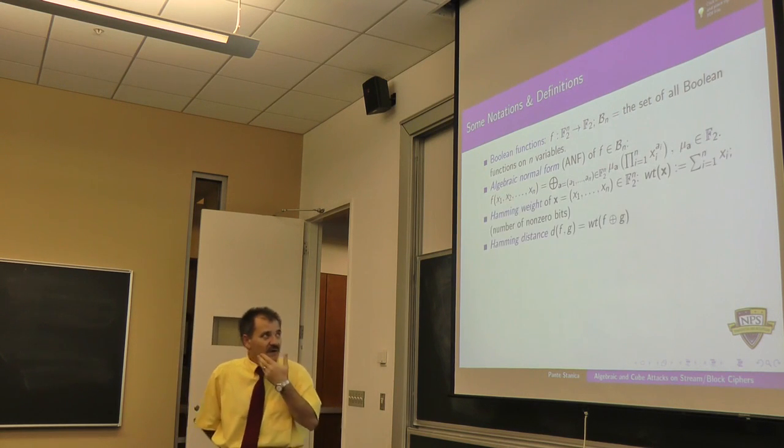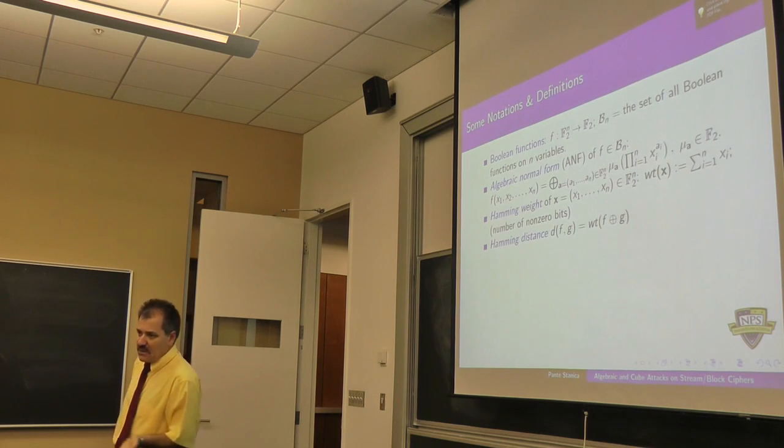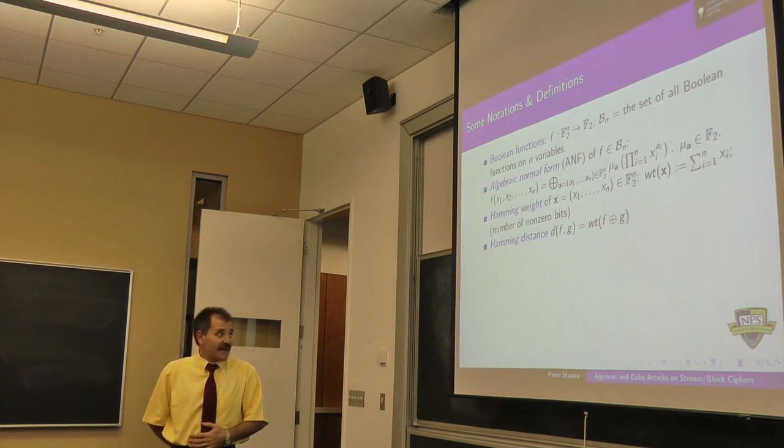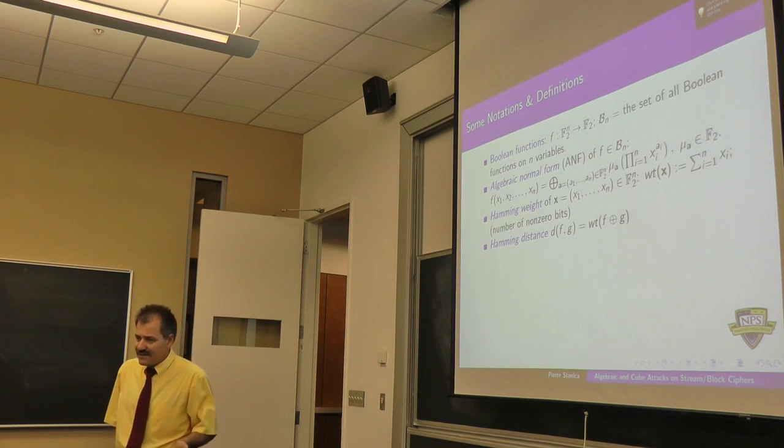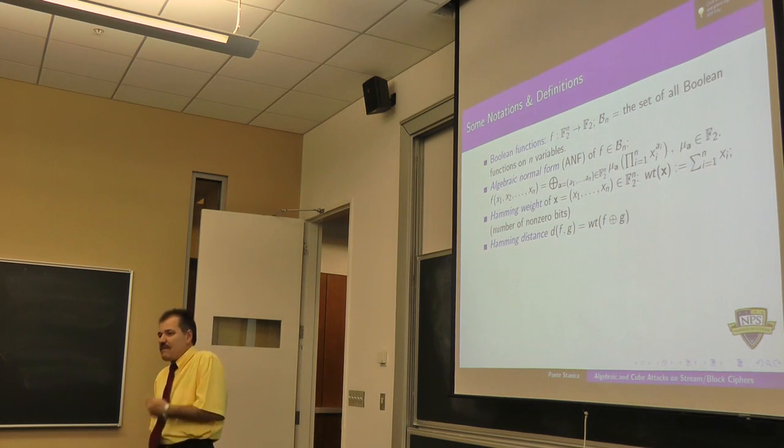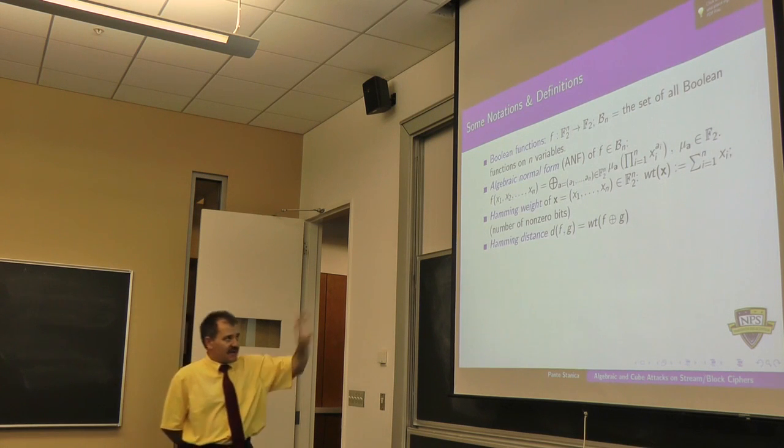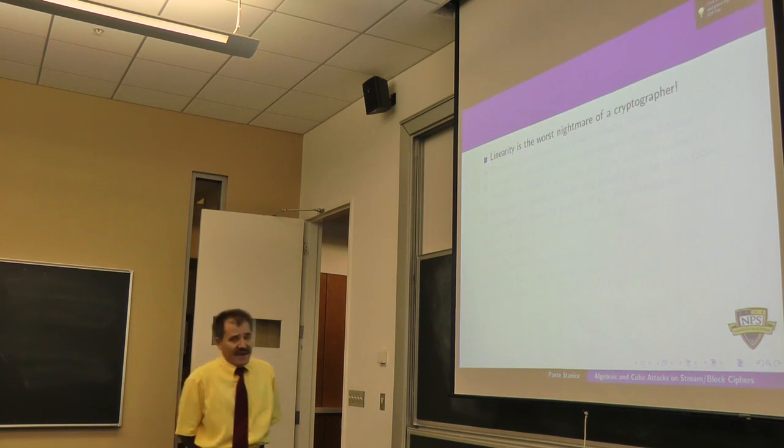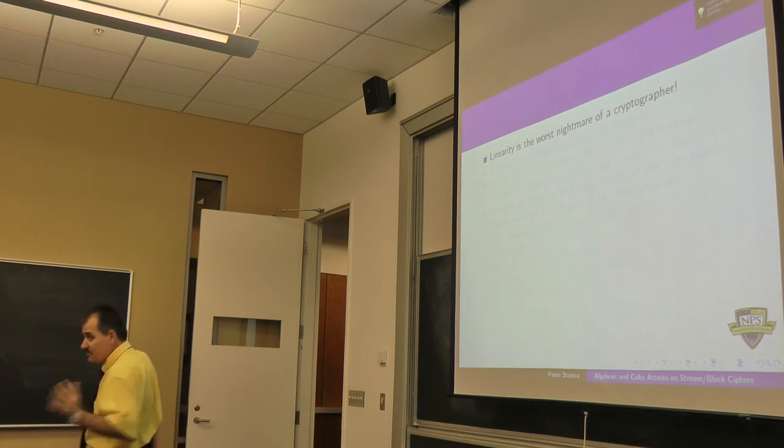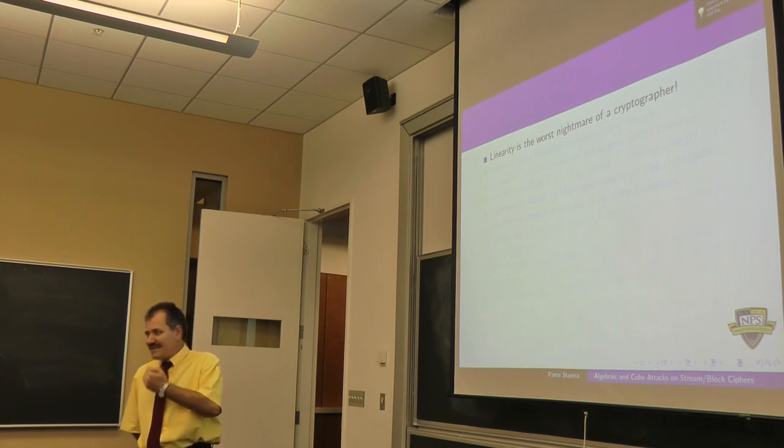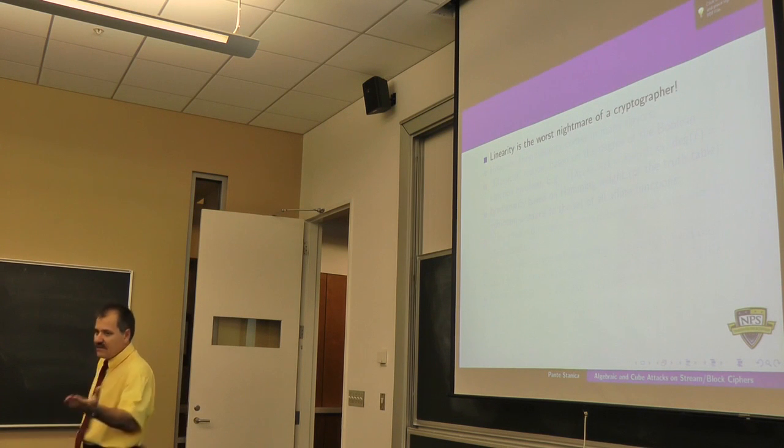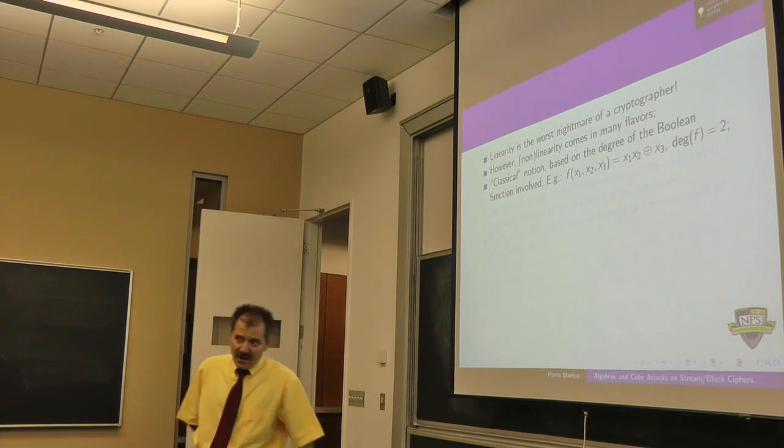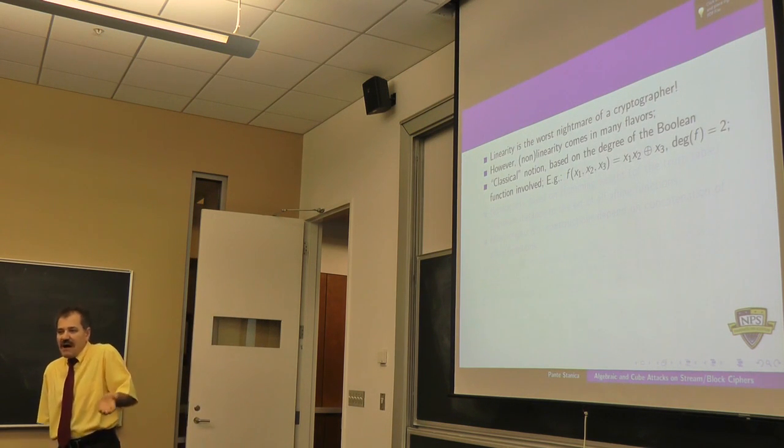A Boolean function is a polynomial accepting n input bits and outputting a bit. There are various tools like Hamming weight and Hamming distance, which count the number of non-zero bits. I'm not going to do too many definitions here - we've seen them on Wednesday. As I mentioned, linearity is the worst nightmare of a cryptographer, and you'll see why.